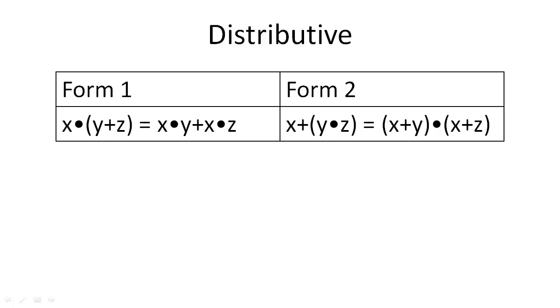Form 1 should be fairly intuitive, as it is analogous to the distributive property in algebra. Notice how form 1 distributes both the literal and the AND operation across the OR operation. Form 2 does the same thing and distributes both the literal and the OR operation across the AND operation.